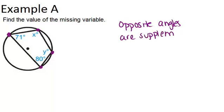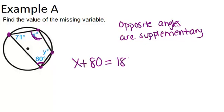So since we know two angles in this quadrilateral, we can figure out the other two angles. x and 80 degrees over here must add up to 180 degrees. They must be supplementary. So that means x must be 100 degrees.